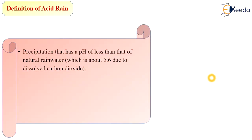Acid rain is precipitation that has a pH of less than that of natural rainwater. That means rainwater occurring in acidic form whose pH is less than 7, approximately 5.6, and this acidic nature formation is because of dissolved carbon dioxide.